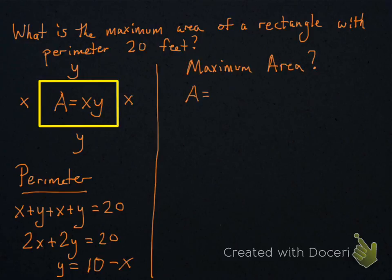So, we want to find the maximum area. Remember, our area is x times y, and we just found that y was equal to 10 minus x. That was what we just did on the bottom left there. So, if we substitute that in, we can get area just as a function of x.